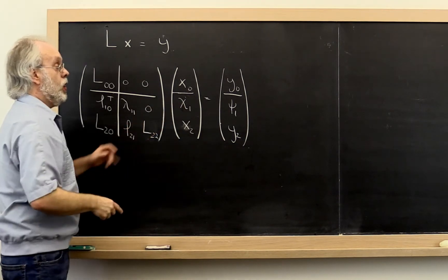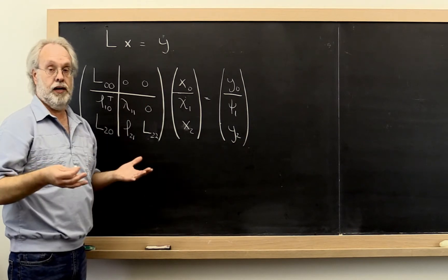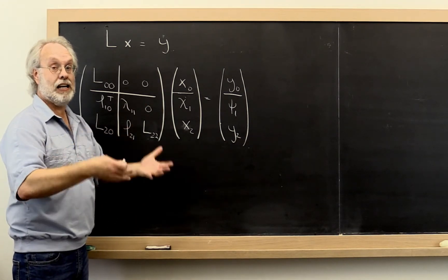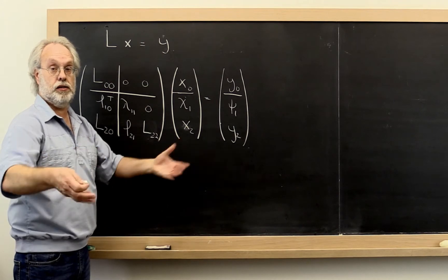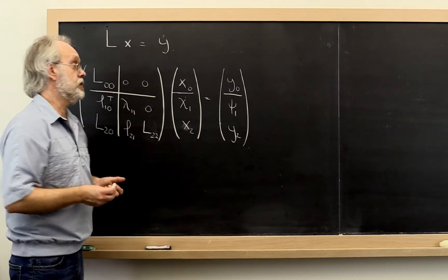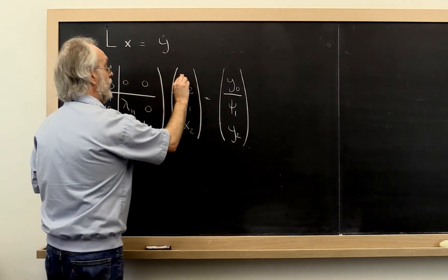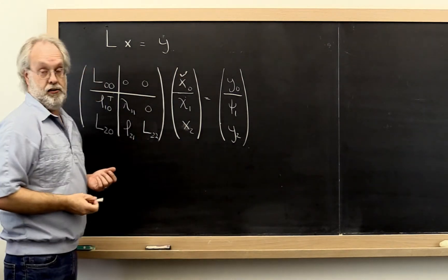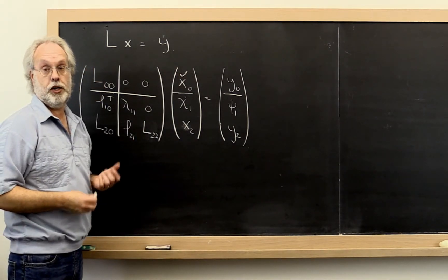Right? Now we have computed x0 already. But obviously we haven't computed the exact result because we're doing this in the presence of roundoff error. So we really have computed an x check so far, the computed result.